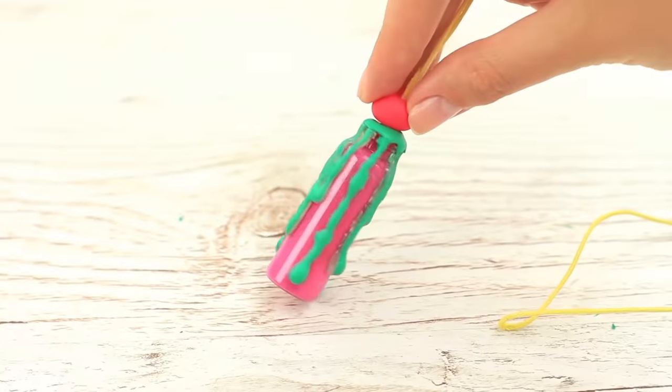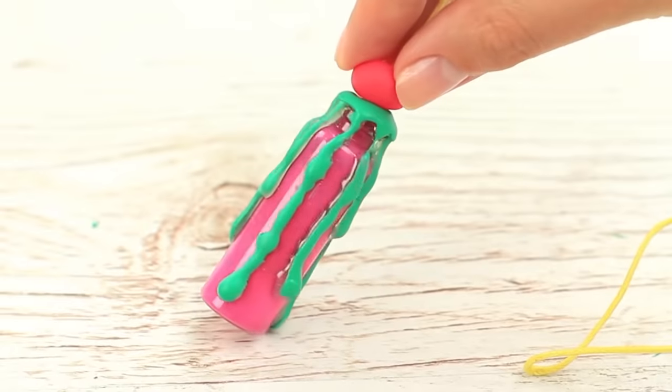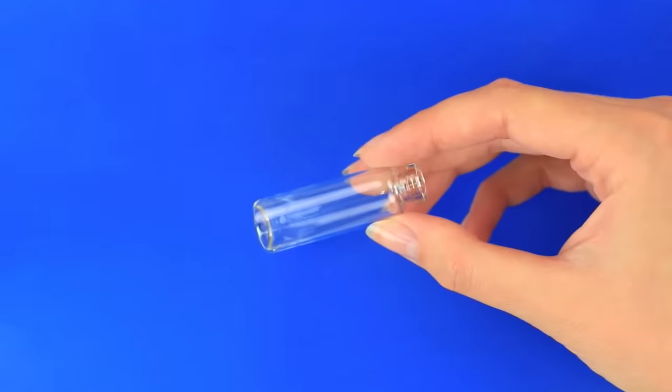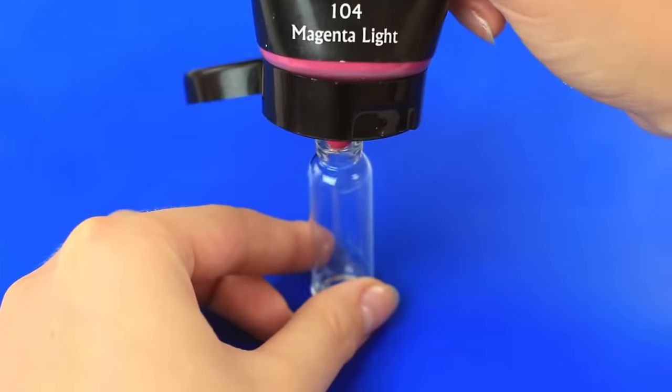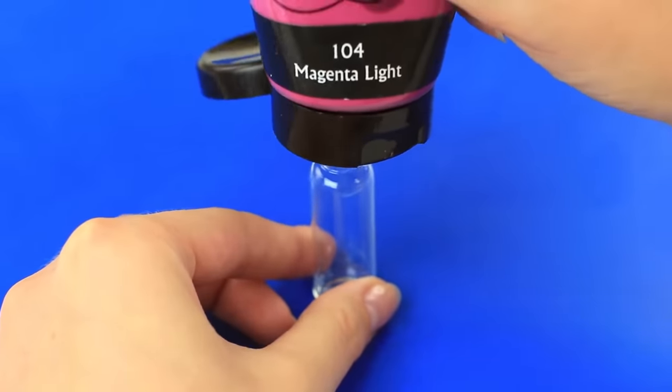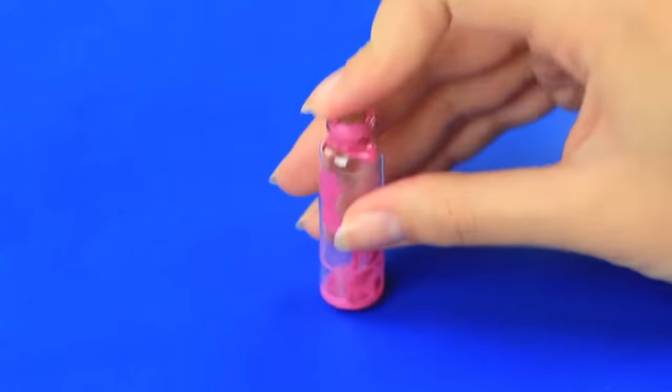Do you need a stunning accessory for a themed party? Add a cute bottle pendant necklace to your collection. Pour a little water in a clear vial. Squeeze in hot pink acrylic paint. Stopper with a cork. Shake well.